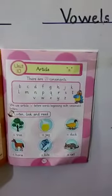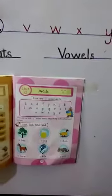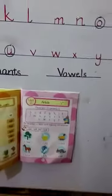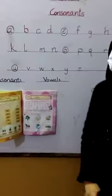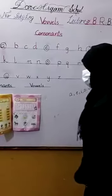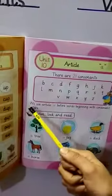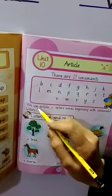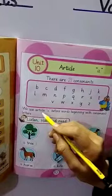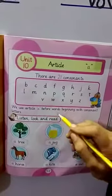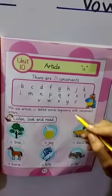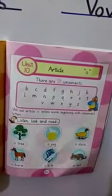There are actually three articles in English: A, an, and the. Here we will just discuss about the article A. Before discussing it, let's read this statement: we use article A before words beginning with consonant letters.